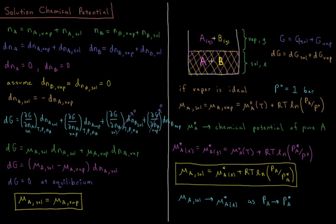The total Gibbs energy of the system is the Gibbs energy of the solution plus the Gibbs energy of the vapor. And the change in the Gibbs energy of the system is the change in the Gibbs energy of the solution plus the change in the Gibbs energy of the vapor.